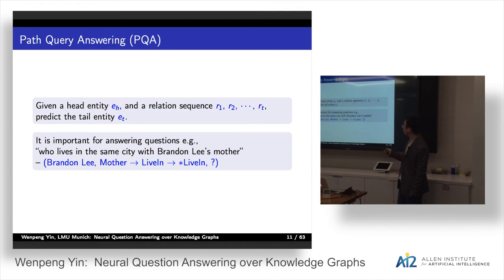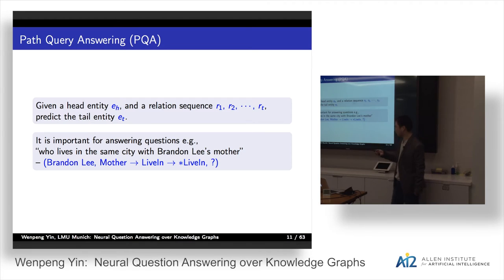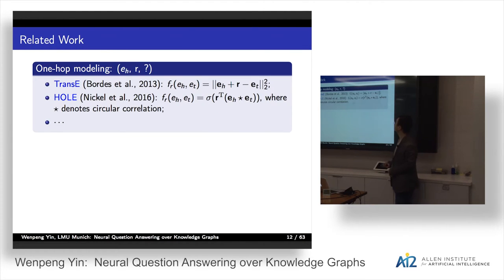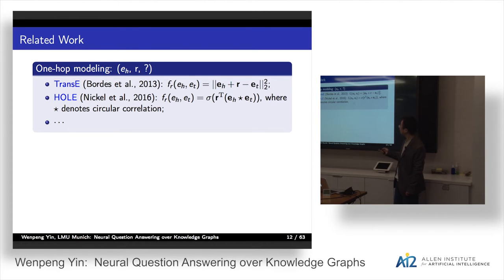The task of path query answering can be defined as: given a head entity and some relation paths, predict the tail entity ET. It's important for answering questions like 'who lives in the same city with Brandon Lee's mother?' In this example, Brandon Lee is the topic entity; mother, living, and inverse living are the relations. The task is to predict which entity should appear at the question mark. Some prior work uses one-hop modeling: given the head entity and the relation, predict the tail entity.